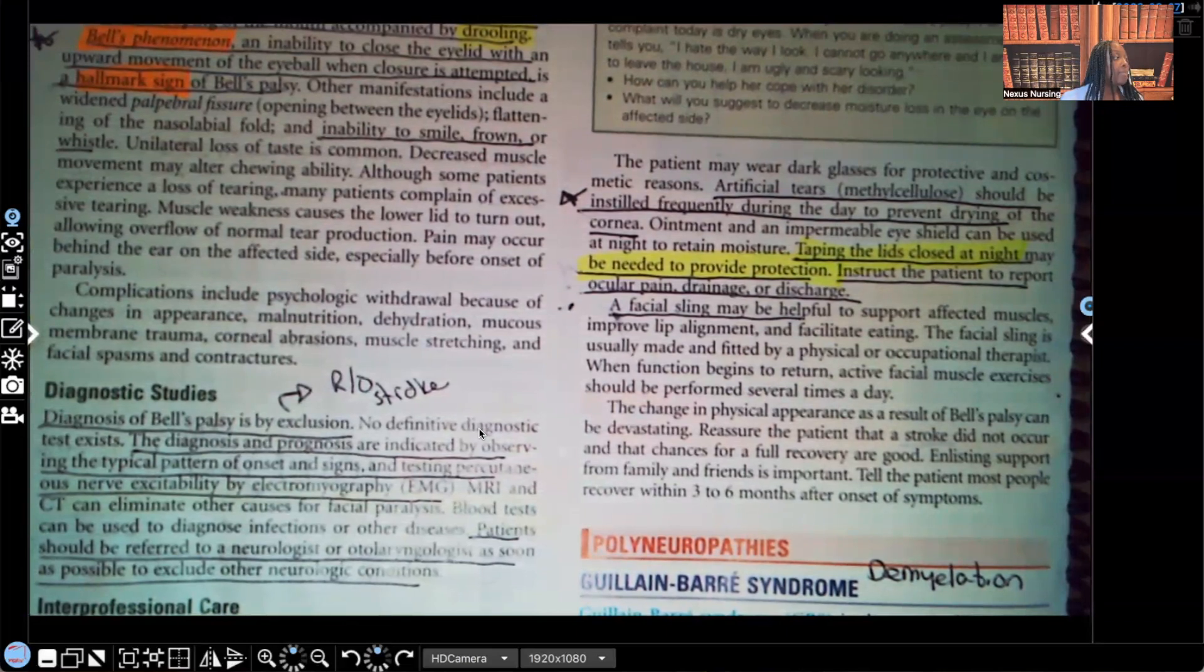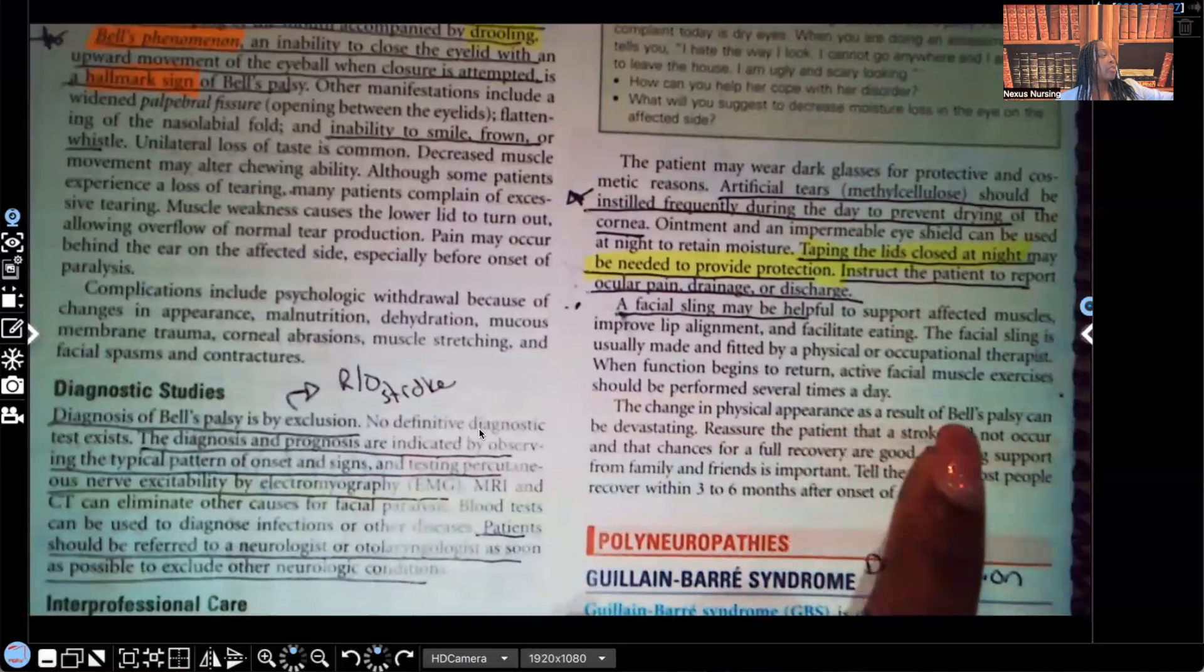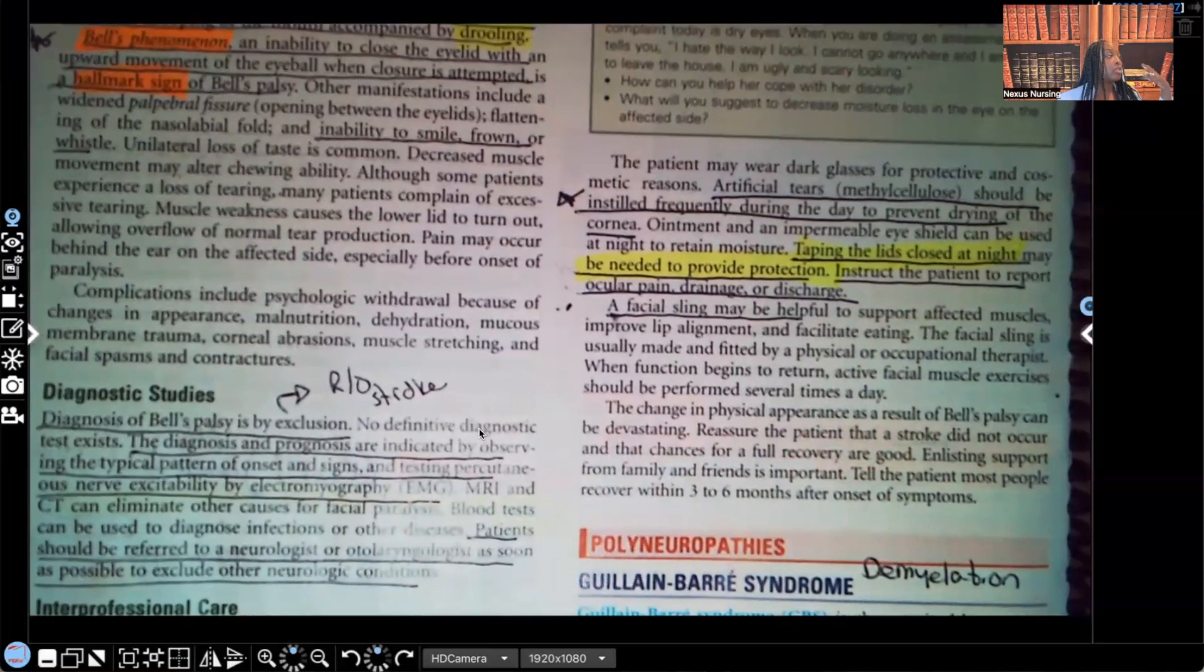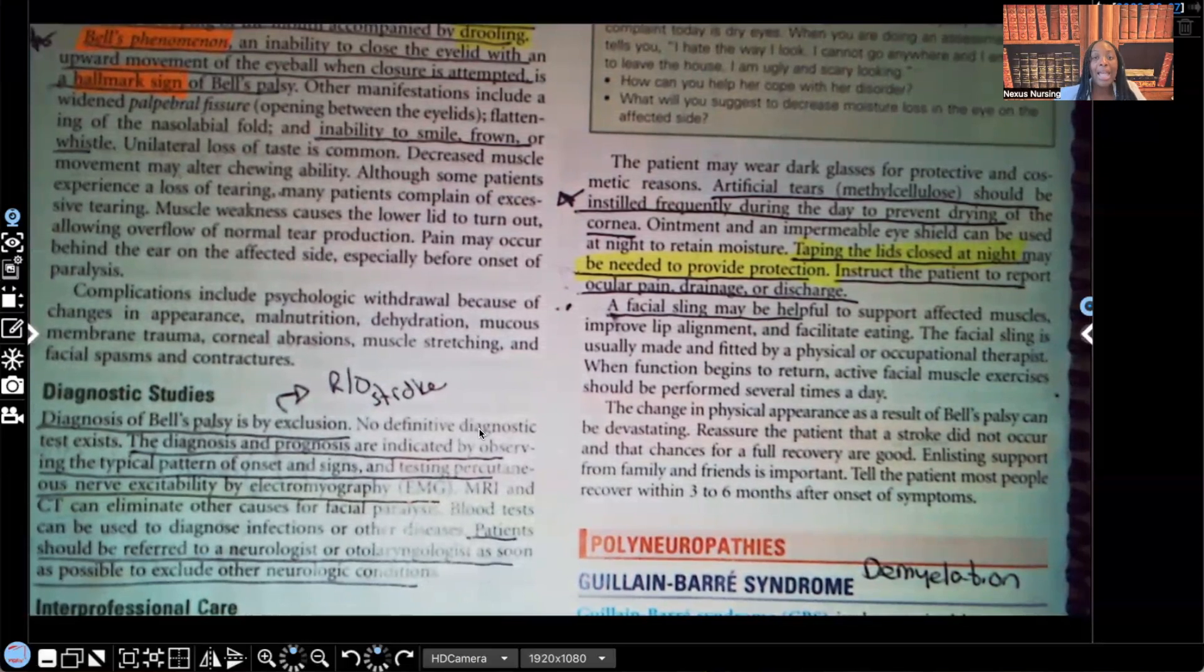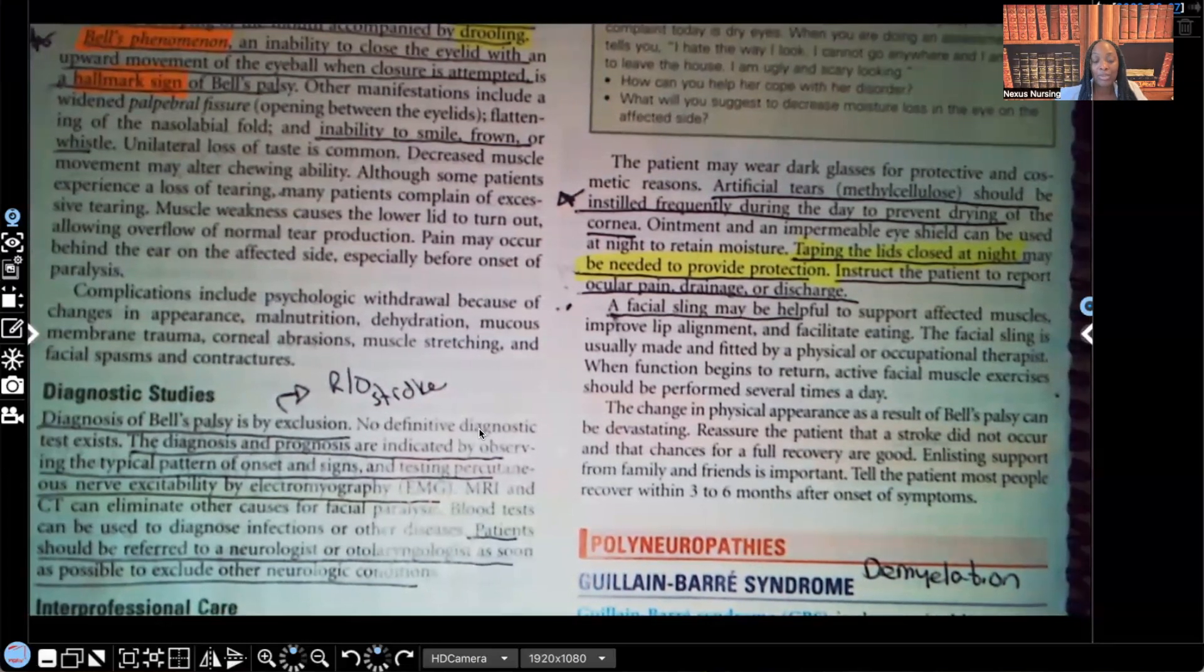A facial sling may be helpful. It says down here, the change in physical appearance as a result of Bell's palsy can be devastating. You're going to reassure the patient that a stroke did not occur and the chances for full recovery are good. And guys, that is your Bell's palsy in a nutshell, the most important things you guys need to know. So please let me know what you thought about this video in the comment section. Please don't forget to give this video a thumbs up and subscribe to my channel if you haven't done so already. You can sign up for your NCLEX review, private tutoring sessions, or consultation sessions by visiting my website, nexusnursinginstitute.com. Thank you so much for watching this video and you guys catch me on the next video.